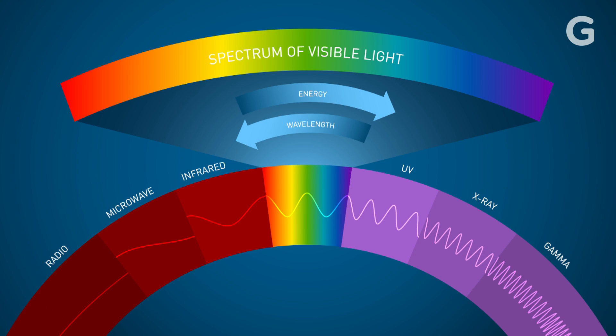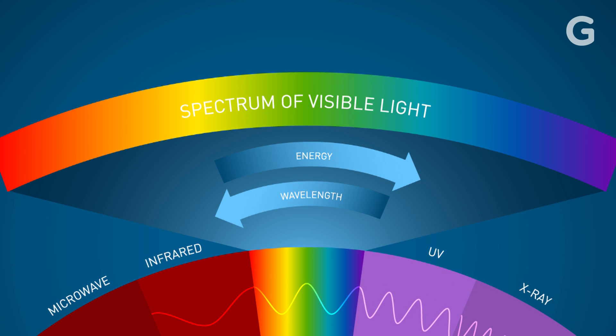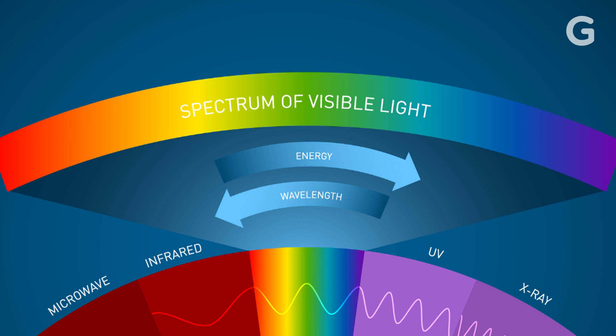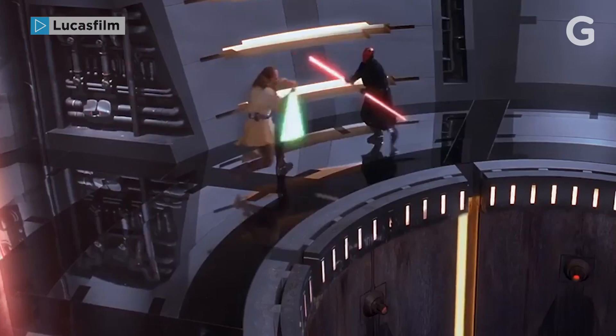But what if lightsabers used lasers? On the electromagnetic spectrum, each frequency of radiation contains a different amount of energy. Within the visible spectrum, violet light contains the most energy and red light contains the least.